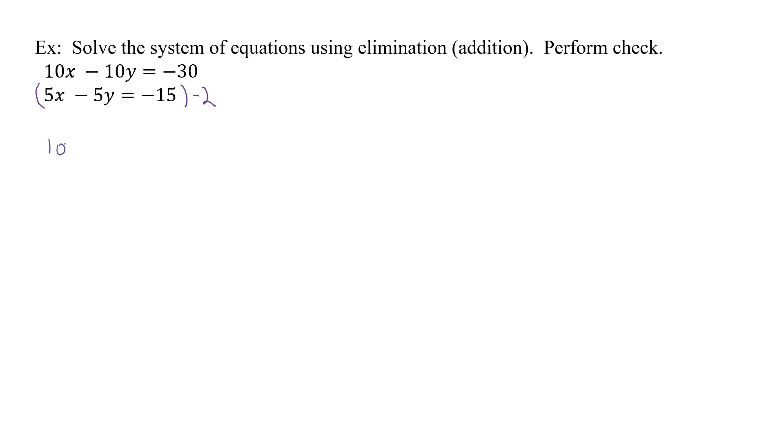So that would give me 10x minus 10y equals negative 30, and down here I would get a negative 10x, then plus 10y equals a plus 30. Well, that minus that zero, that minus that, that's zero.